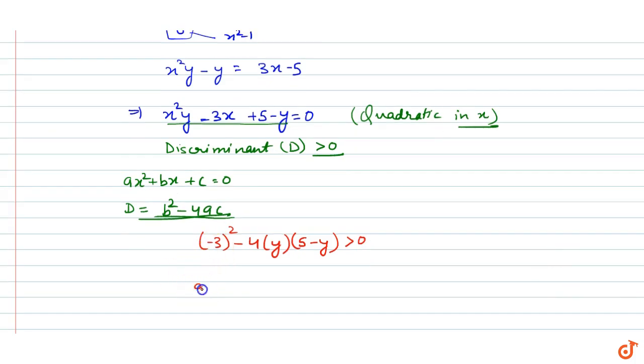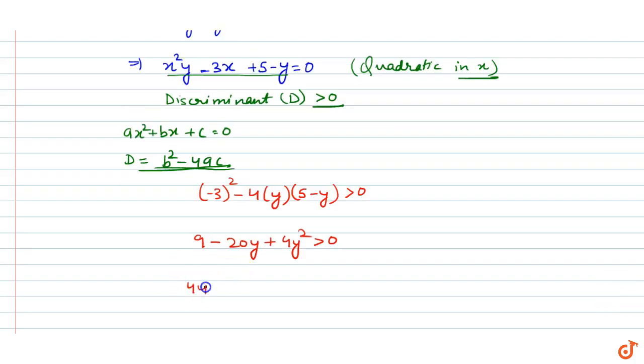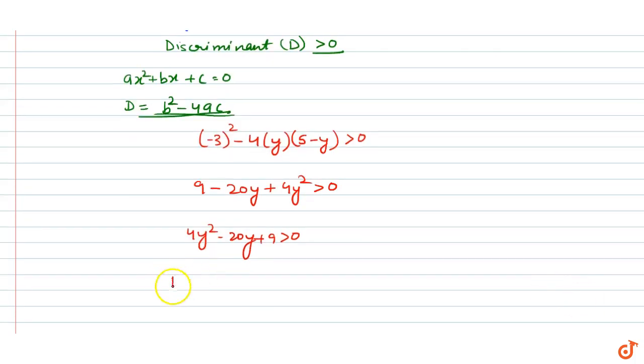We get 9 - 20y + 4y² > 0, which can be written as 4y² - 20y + 9 > 0.